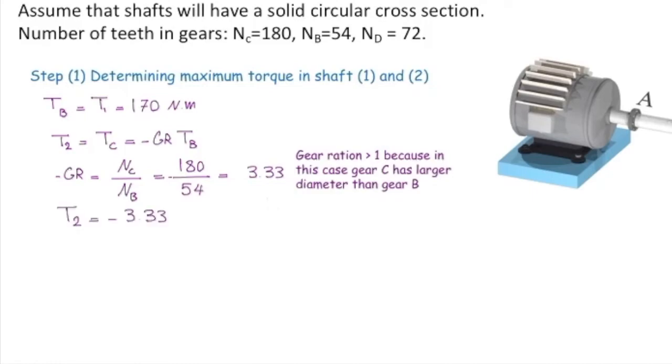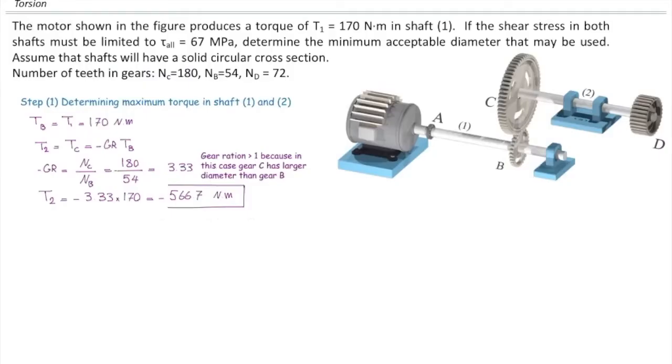With that, I can determine how much is torque in the second shaft and that would be 566.7 Nm with a negative sign. And now I have both torques. And which of these two torques is used for designing the shafts? The larger one is more critical because I want to have the same diameter for both shafts. So I'm going to consider T2.